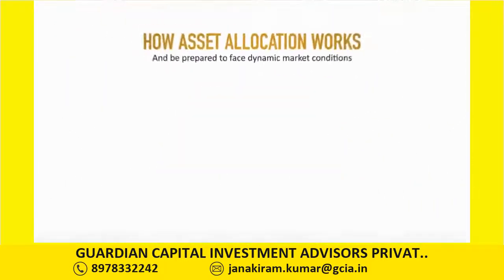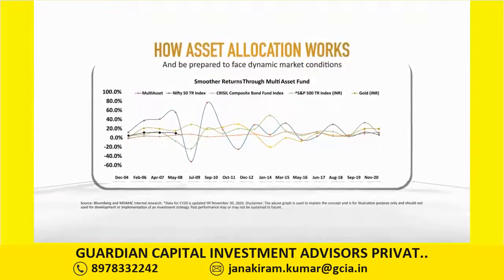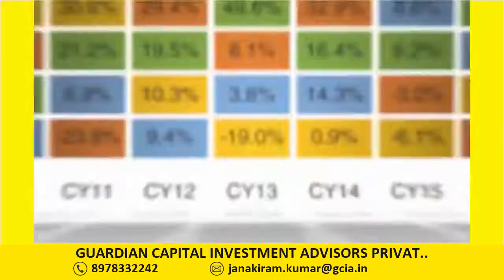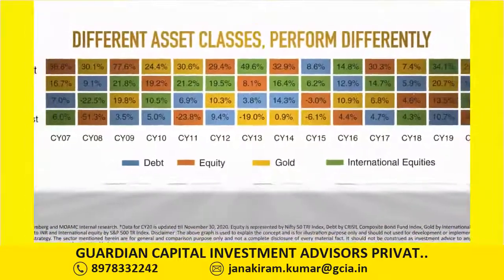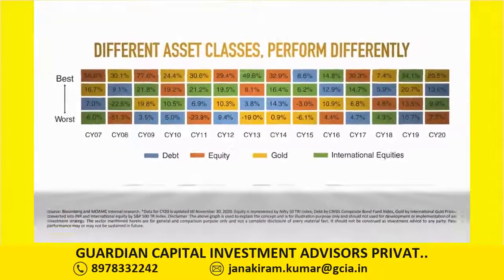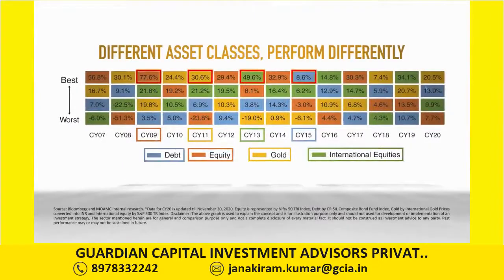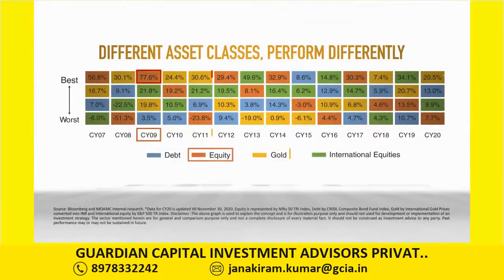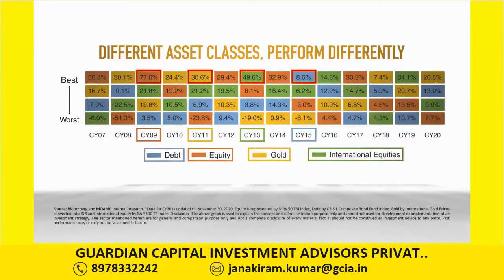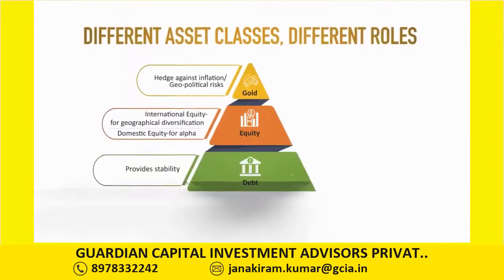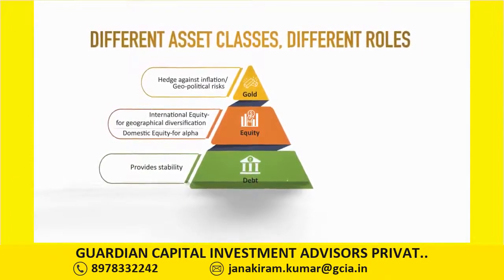The Motilal Oswal Multi-Asset Fund has four different asset classes with a low correlation to perform in different market conditions. As different asset classes outperform each other at different times, allocating funds to one asset class is not considered a wise investment move, as it is prone to behave inconsistently in the long run. A portfolio with multiple asset classes can thrive across various market conditions — if one fails, the others perform.